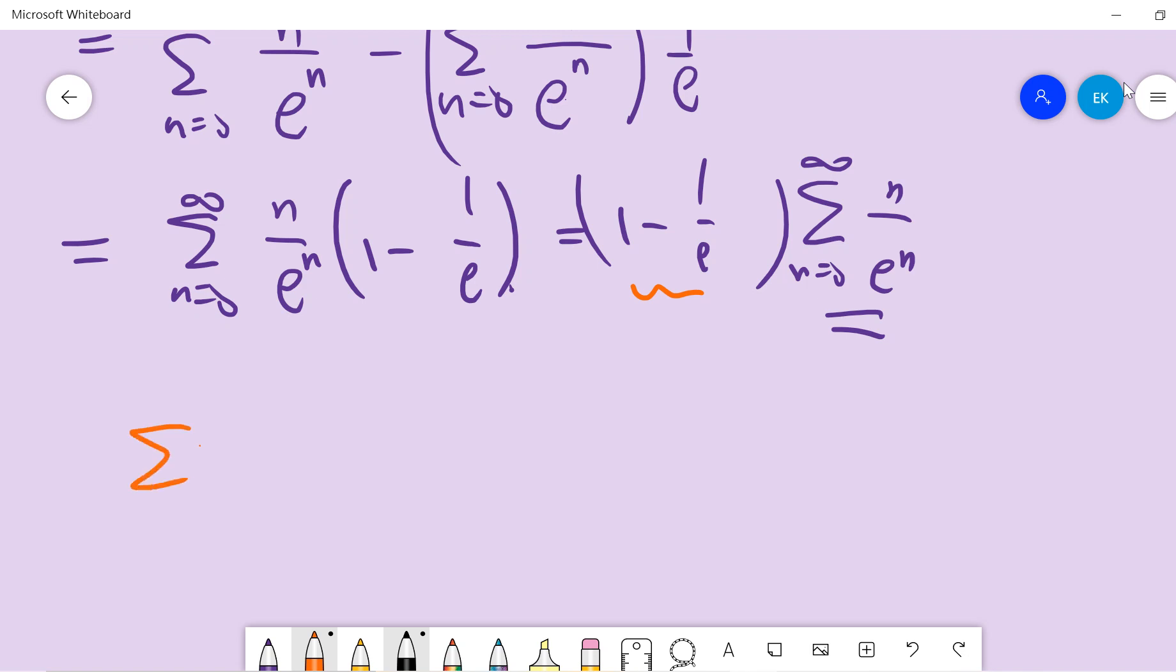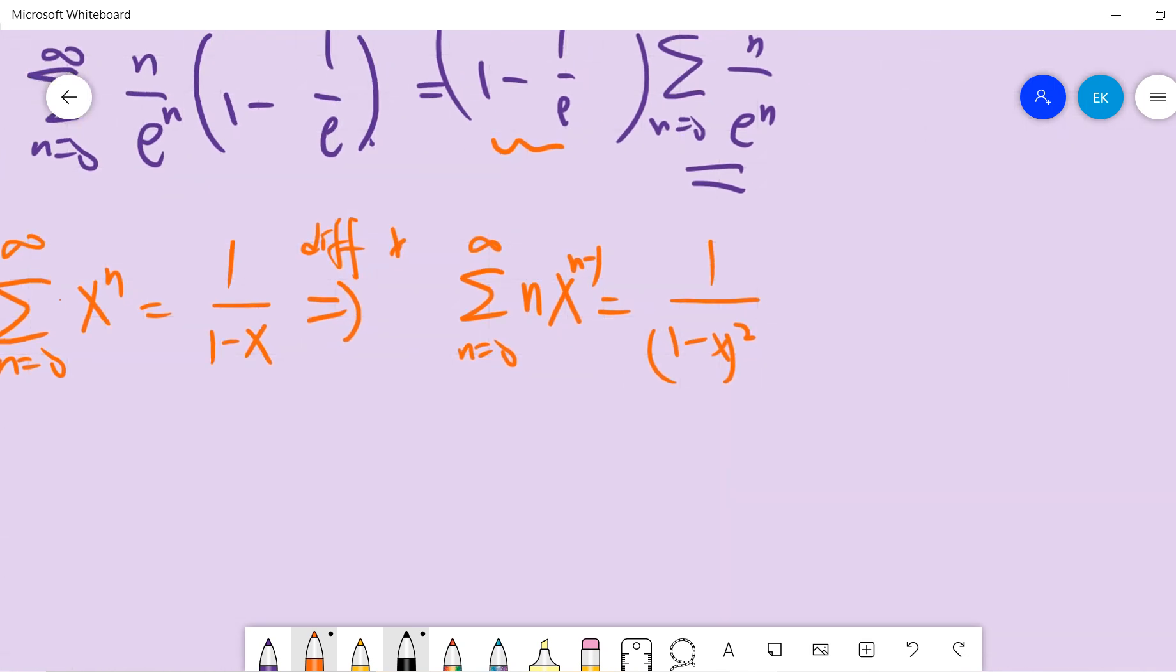We know that sum of x^n from n=0 to infinity is 1/(1-x). We differentiate with respect to x to get sum of nx^(n-1) equals 1/(1-x)^2, and we multiply both sides by x.